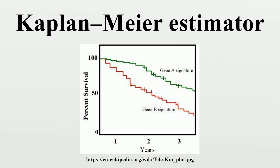There is an alternative definition that is sometimes used; the two definitions differ only at the observed event times. The latter definition is right continuous whereas the former definition is left continuous. Let F be the random variable that measures the time of failure and let F be its cumulative distribution function. The right continuous definition may be preferred in order to make the estimate compatible with the right continuous estimate of F.